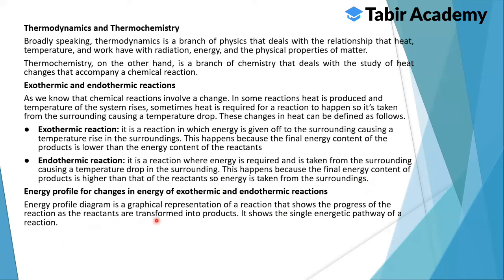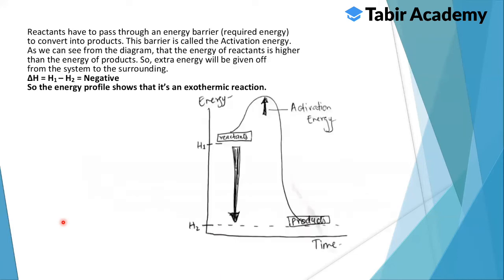An energy profile diagram is a graphical representation of a reaction that shows the progress of the reaction. It shows a single energetic pathway of the reaction. Activation energy is the energy barrier — if the reactants do not pass through this point, the reaction will not take place. In an exothermic profile, the products have lower energy than the reactants.